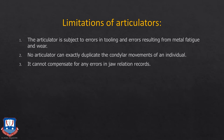However, articulators do have certain limitations. The articulator is subject to errors of tooling and errors resulting from metal fatigue and wear. No articulator can exactly duplicate the patient's condylar movement. It cannot compensate for any errors in the jaw relation — if there were errors in the jaw relationship, those errors will be compounded on the articulator and there is no way to adjust or compensate them. However, with the advent of fully adjustable articulators, pantographs, and stereographs, we can to a great extent replicate the true hinge axis of the patient's TMJ, which is the closest thing to a natural patient.